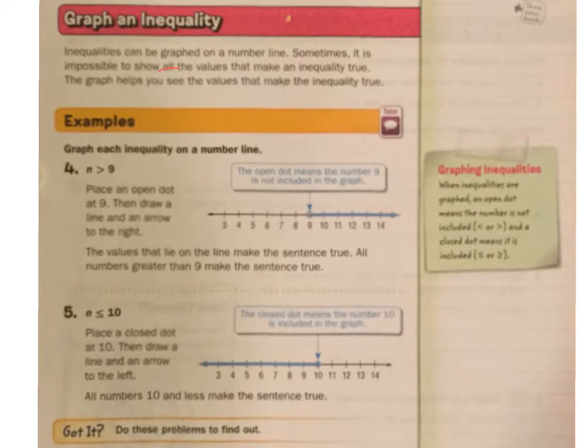So graph each inequality on a number line. If we have n is greater than 9, so we have 9 here, so it's not 9, but anything except for 9, everything greater than 9, and it would be like 9.1. You put a circle around 9 saying that it's not 9, but it's every little thing greater than 9. Place an open dot at 9 and draw a line and an arrow to the right. Let's look at the next one.